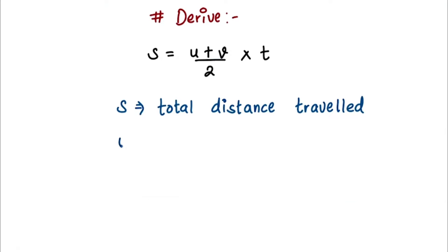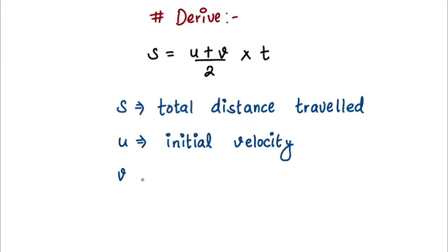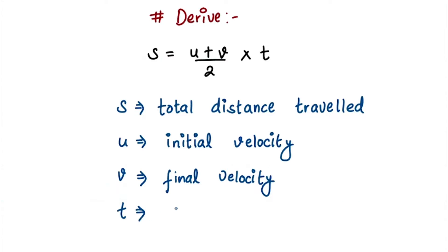Our u is initial velocity, our v is final velocity, and our t is total time taken.